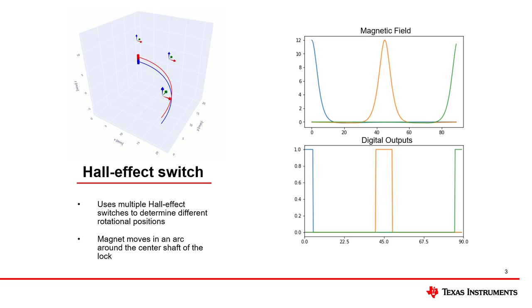In this example, the magnet moves 90 degrees and the switches can be used to determine if the lock is completely open, completely closed, or in between the two states.